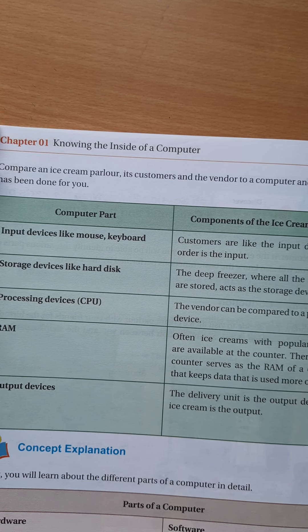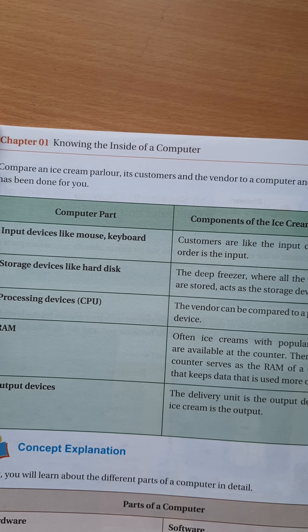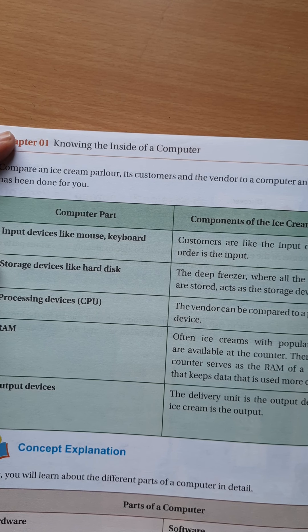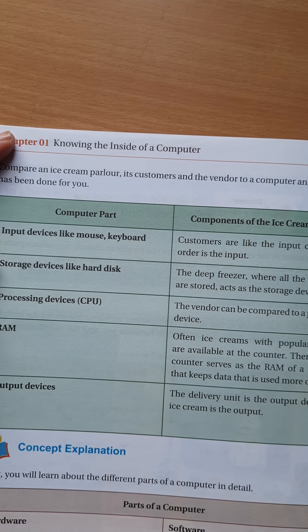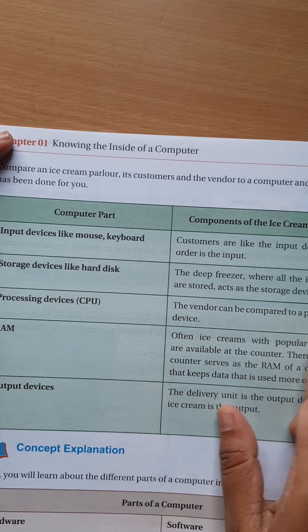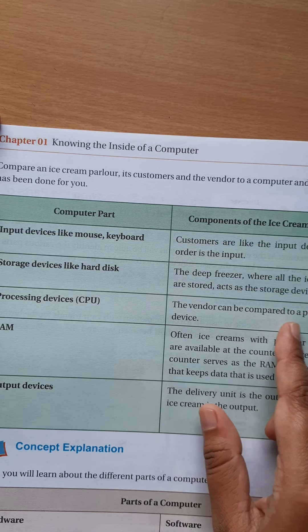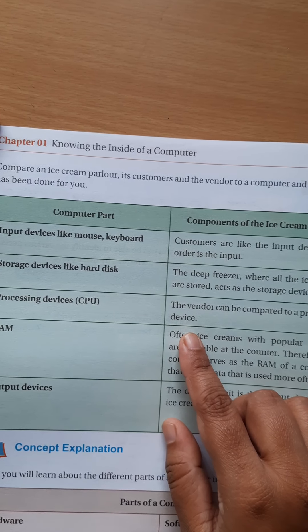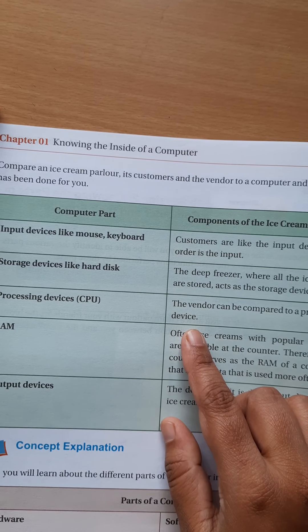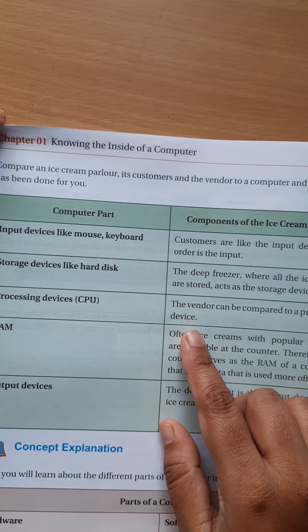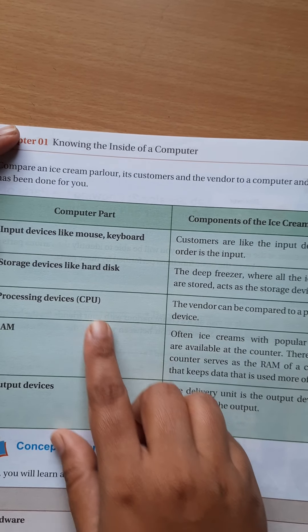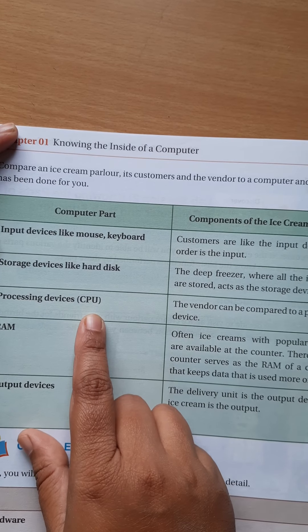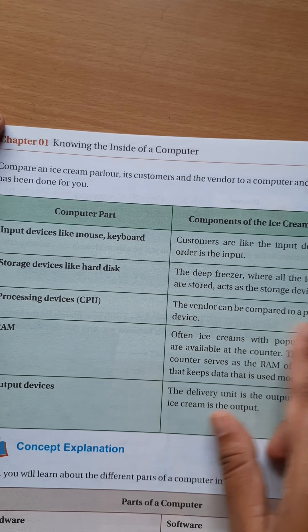The deep freezer where all the ice creams are stored acts as the storage device — like the hard disk in a computer, where all data is stored. The vendor can be compared to a processing device, meaning the CPU. The CPU processes the data, just as the vendor processes the order.